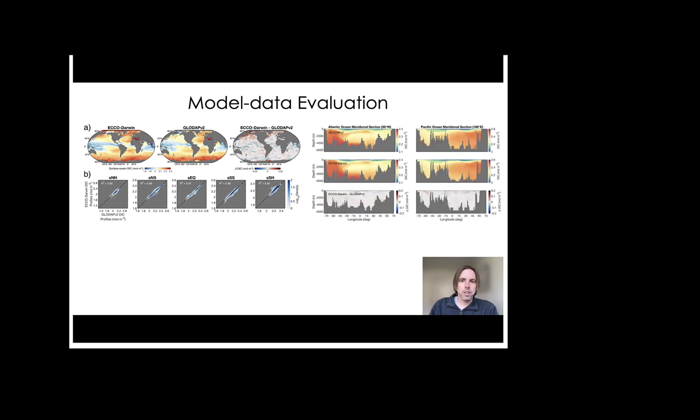Now on the right-hand side figure here, I'm showing a comparison of ECCO-Darwin and GLODAP-v2 climatological sections. So these are meridional sections taken in the Atlantic and also the Pacific Oceans. And you can see the general agreement between the vertical structure of DIC.